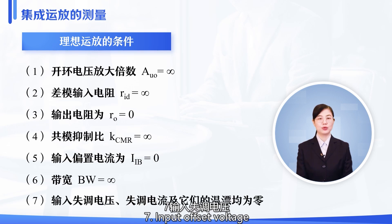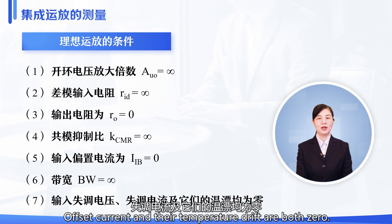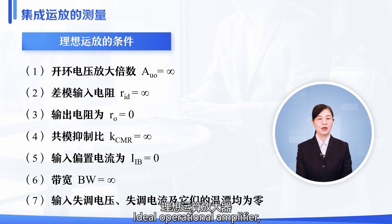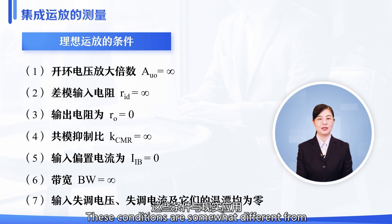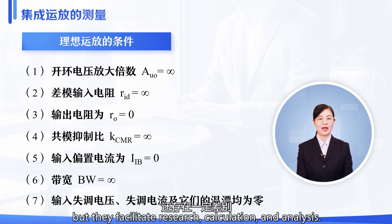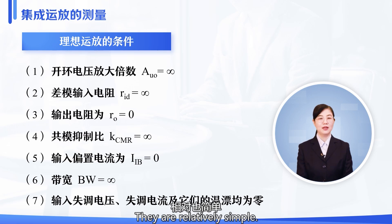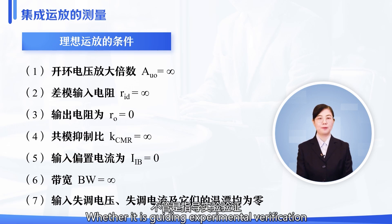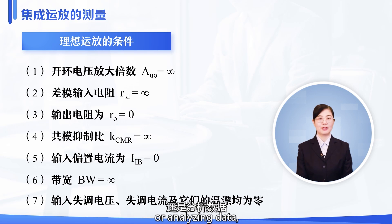6. Bandwidth is infinity. 7. Input offset voltage, offset current, and their temperature drift are both zero. These conditions are somewhat different from real-world applications, but they facilitate research, calculation, and analysis. They are relatively simple. Whether it is guiding experimental verification or analyzing data, they are not affected.